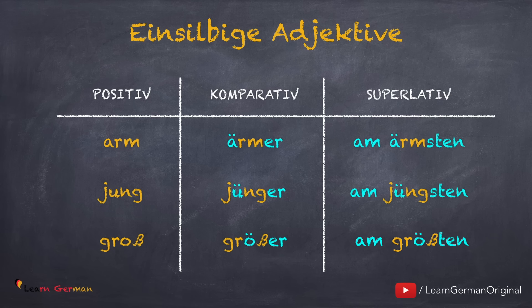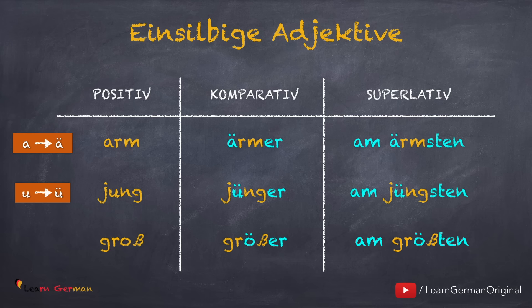Here is the next category. Similarly, U changes to Ü with umlaut, and so does the pronunciation. And the same thing happens with adjectives that have an O — O changes to Ö with umlaut. You'll notice a change in the pronunciation too. Groß, größer, am größten.